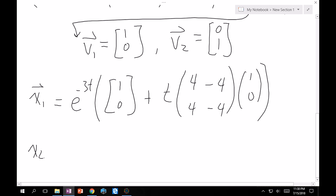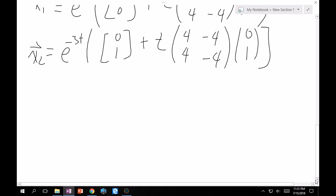And then similarly our x2 is essentially the same thing, e minus 3t times 0, 1 plus t times 4, 4, minus 4, minus 4 times 0, 1. Great. These are pretty easy matrix multiplications but I'll solve them out for you anyway. So x1 in this case is then e minus 3t times 1 plus 4t, 4t and similarly x2 is e minus 3t times minus 4t, 1 minus 4t.